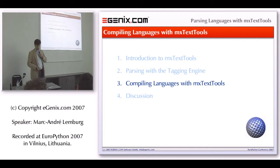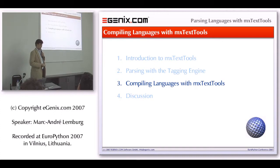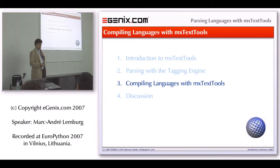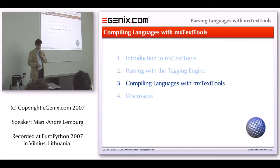So now I've given you a short overview of the tagging engine and how it works. You have three things to remember: first, the tag table, which is the program you put into the tag engine; then the tag objects that you use in the tag table, which you assign to the slices you match; and then the tagging engine creates the tag list, which is the output of the tag engine — it contains the tag objects plus the slices you matched. I'm going to use that to show you how to compile languages using MX Text Tools.